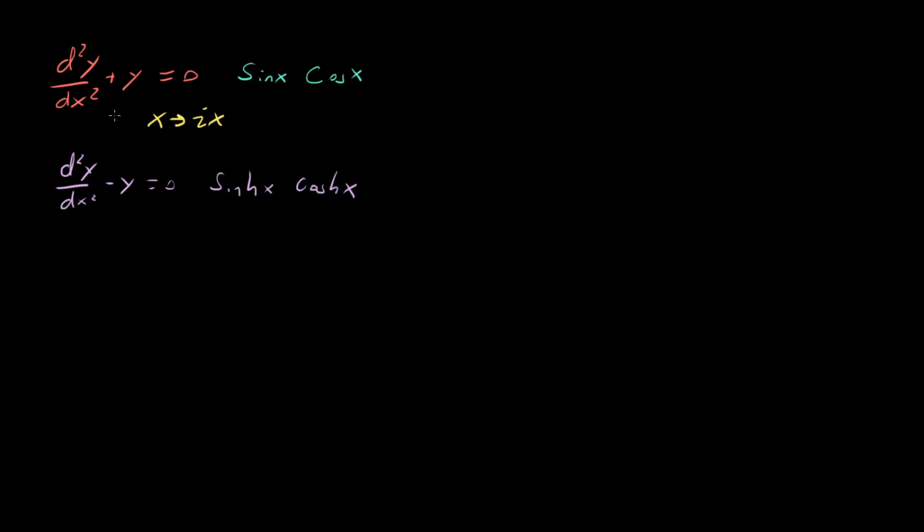And since the only difference between these two equations is that we multiplied this x by an i, then these two solutions we expect to be related in sort of a similar way. In fact, what we find is that sin(ix) = i sinh(x), and cos(ix) = cosh(x).